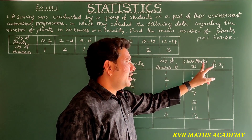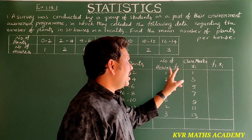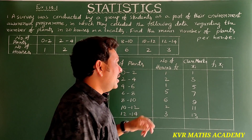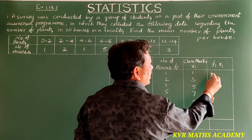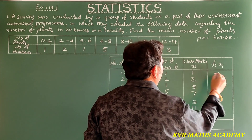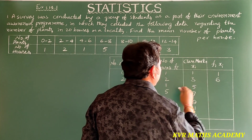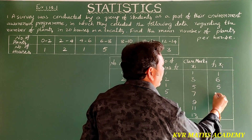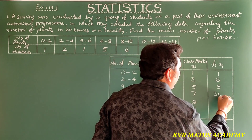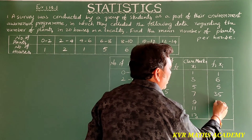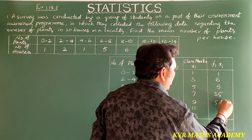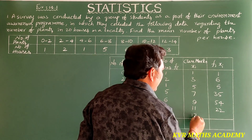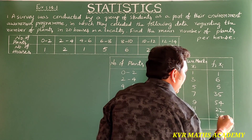Next, we calculate fi·xi — multiply fi by xi for each row. So: 1×1 = 1, 2×3 = 6, 1×5 = 5, 5×7 = 35, 6×9 = 54, 2×11 = 22, and 3×13 = 39.